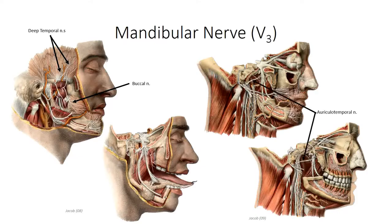The posterior branch gives off three major divisions. The auriculotemporal nerve branches as two separate roots that fuse after encircling the middle meningeal artery. It then emerges superficially behind the neck of the mandible and runs superiorly to provide sensation to the skin in front of the ear. It also carries parasympathetic innervation originating from the glossopharyngeal nerve to the parotid gland to stimulate salivation. The second branch is the lingual nerve, which runs antero-inferiorly to the base of the tongue to provide general sensation to the anterior two-thirds of this organ. So anytime you bite or burn your tongue, the pain sensation is picked up by the lingual nerve.